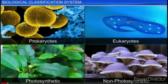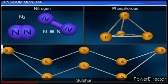Photosynthetic means they synthesize their own food in the presence of sunlight. Chemosynthetic bacteria use inorganic substances like nitrates, nitrites, and ammonia, and release energy in the form of ATP.